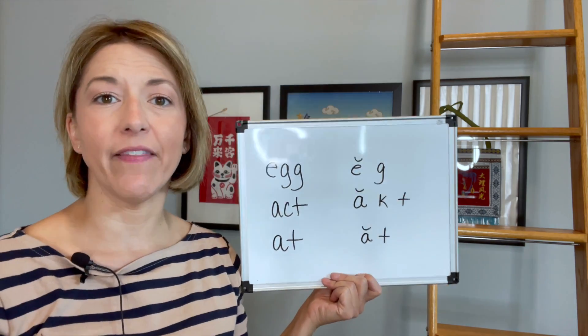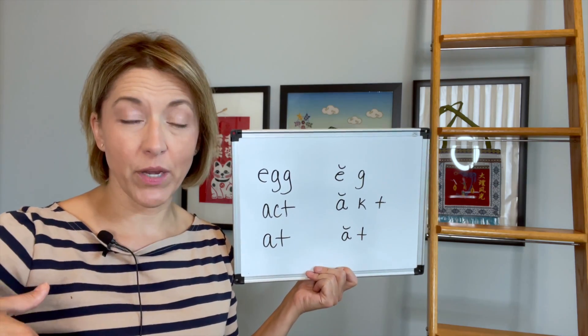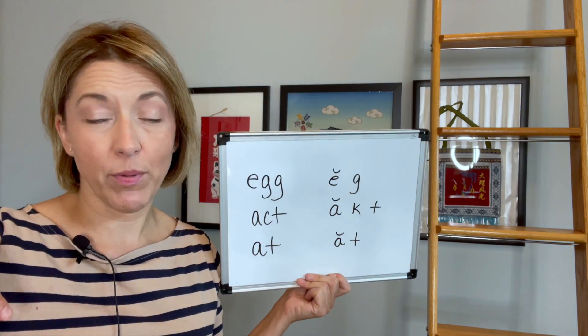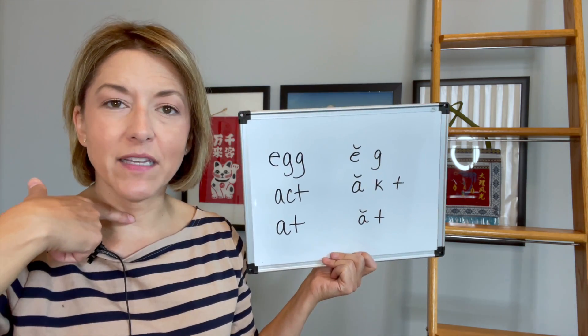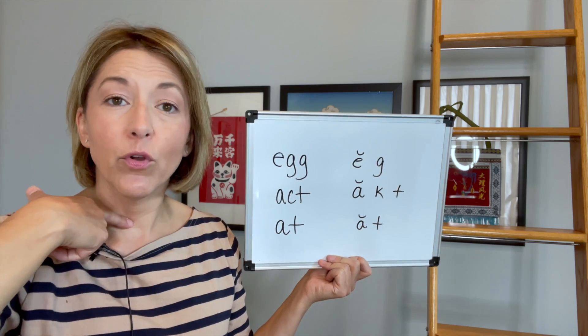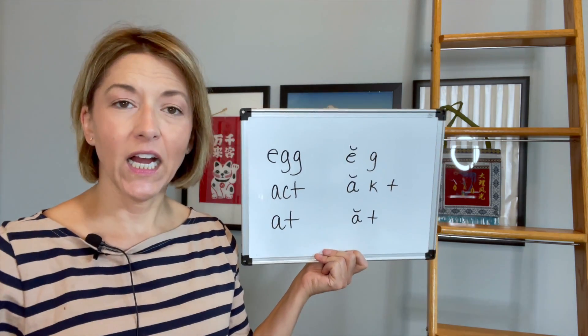Now let's talk about the g and the k. Same position for these sounds. Tip of the tongue is going to be down, back of the tongue is going to be pulled high up. We have g, g, g. Your voice box is on and moving. For the k, your voice box is off: k, k, k.